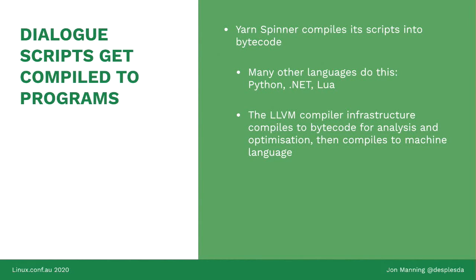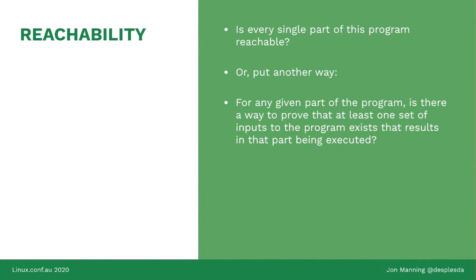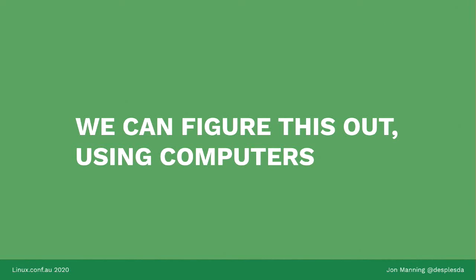Yarnspinner compiles its scripts to an internal bytecode in a manner very similar to Python, .NET, Lua, and LLVM. This method of going from a high-level language to an intermediate representation for execution is really common. So let's look at the specific question: can we prove the reachability of a line? Can we prove that a certain line of dialogue in our game can be reached under some set of choices made by the player? More formally: for any given part of the program, is there at least one set of inputs such that that line will be run?